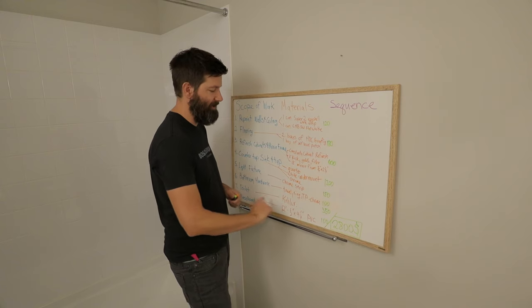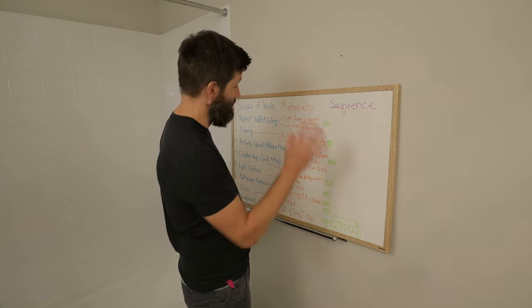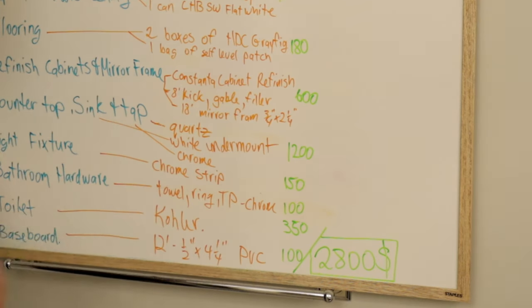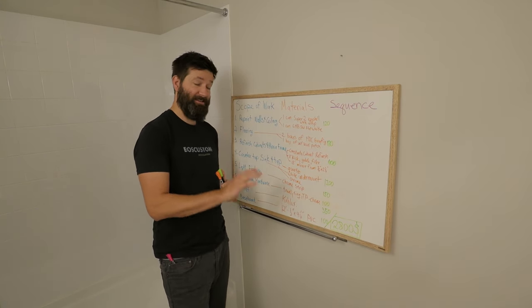So we're going to avoid that with the PVC. I've allowed a hundred bucks for that. So all in all, the whole materials is going to cost about $2,800. So it's probably going to cost more than that. If you've ever renovated anything, that's an estimate.